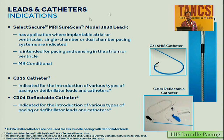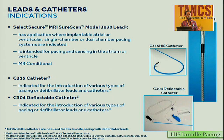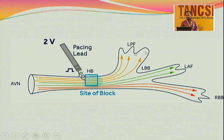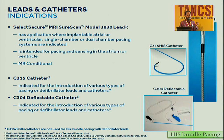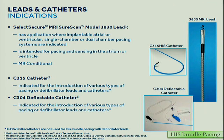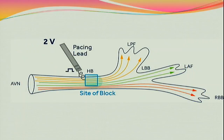You can see the sheath here — it has two curves. This curve facilitates entry into the His bundle region. It is nothing but a routine pacemaker with these additional gadgets. The sheath directs us toward the His bundle region. This lead, unlike a routine pacing lead, has an open helix, so you have to screw the whole lead rather than just the lead tip. Being an open helix, it will damage cardiac tissue if put directly, so it must always be kept inside the sheath with just the lead tip protruding for mapping.